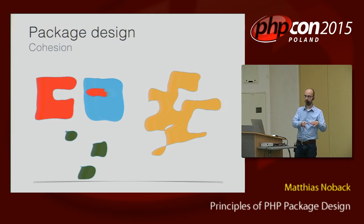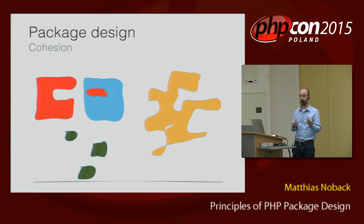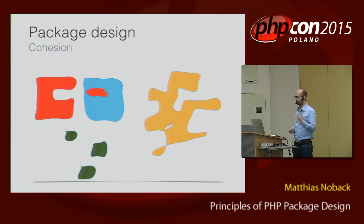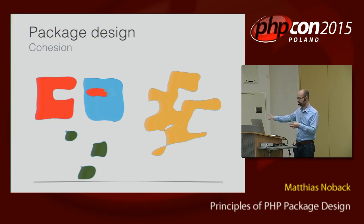The first set of these package design principles — there are three of them — are about cohesion. Cohesion is about what belongs together and what doesn't. If one of your colleagues comes to you and says this class doesn't belong there, or maybe tells you that this method does two different things that don't belong together — that's about cohesion. You have to worry about: does this code belong in this place, or should it be somewhere else? We can group the code in many different ways.